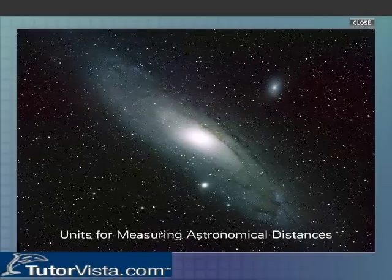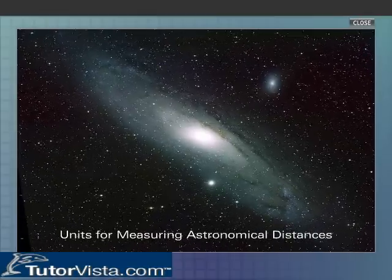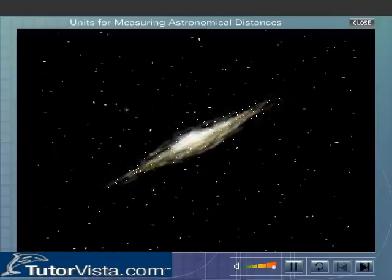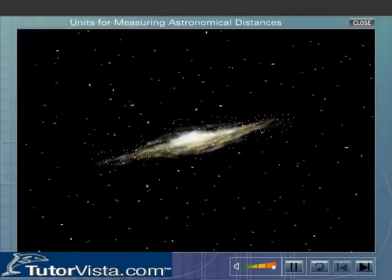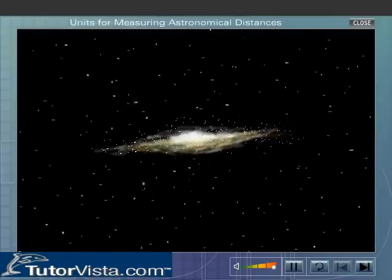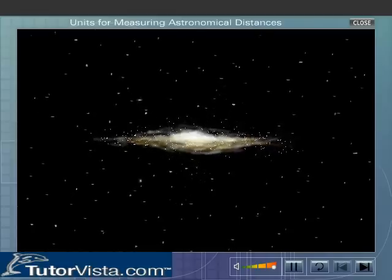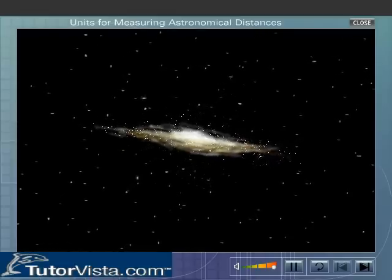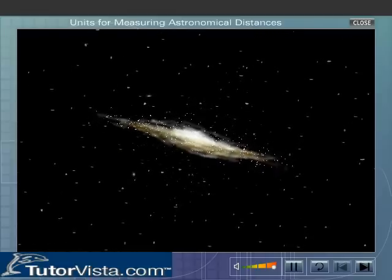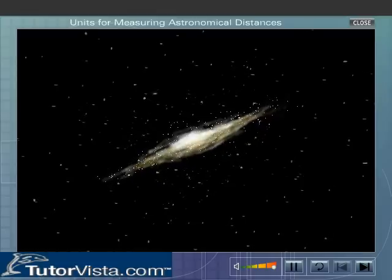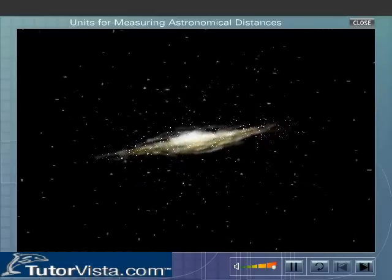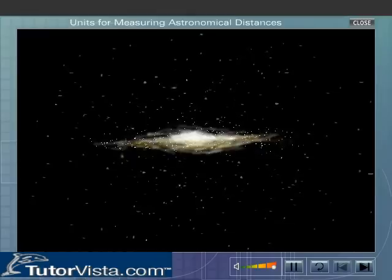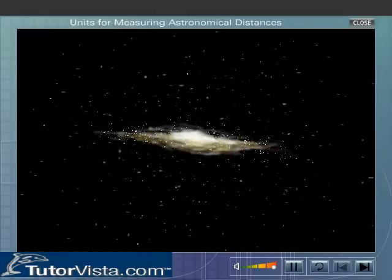Units for Measuring Astronomical Distances. The various celestial bodies in the universe are separated by very large distances. These distances are so large that metre and kilometre, the units of length, are extremely small. The extremely large distances between the various heavenly bodies are expressed in terms of astronomical units of distance.